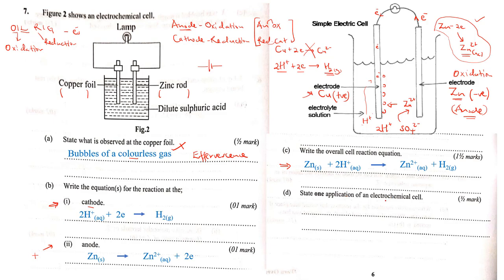Part D, state one application of an electrochemical cell. Obviously, these are quite many, but they are related. We can use it to manufacture dry cells. We can use it to manufacture wet cells. We can use it to make batteries. You can also read about other uses of electrochemical cells.